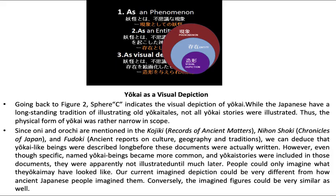Yokai has a visual depiction. Referring back to figure 2, sphere C, it indicates the visual depiction of a Yokai. While the Japanese have a long-standing tradition of illustrating old Yokai tales, not all Yokai stories were illustrated. Thus the physical form of Yokai was rather narrow in scope. Since Oni and Orochi are mentioned in the Kojiki and Nihon Shoki — works of the ancient age that can be translated as 'Records of Ancient Matters' and 'Chronicles of Japan' — as well as Fudoki, ancient reports on culture, geography, and tradition, we can deduce that Yokai-like beings were described long before these documents were written.